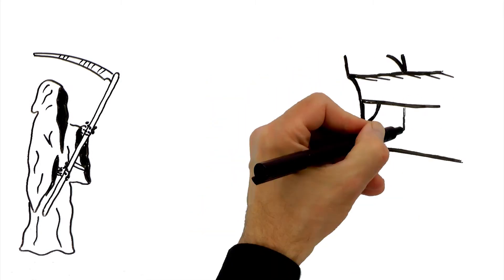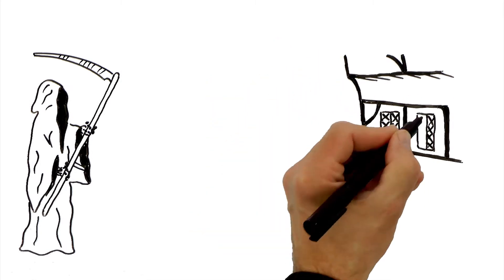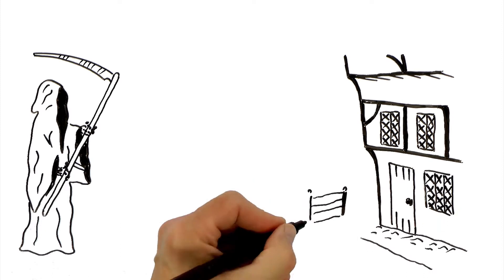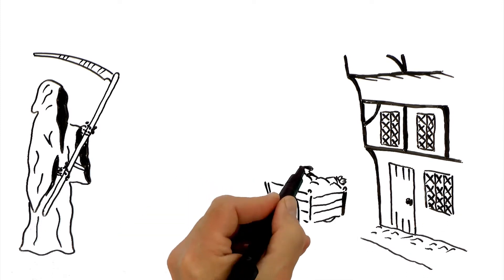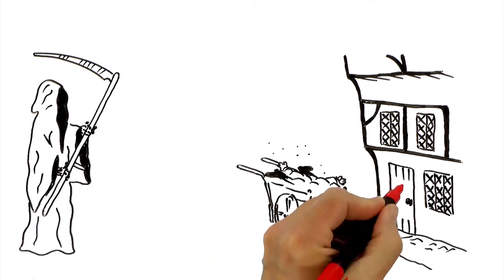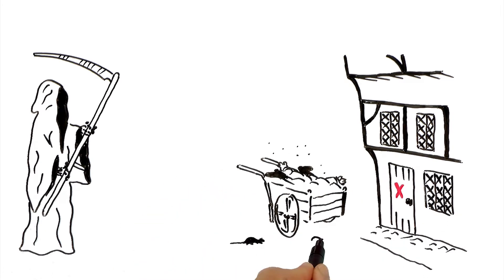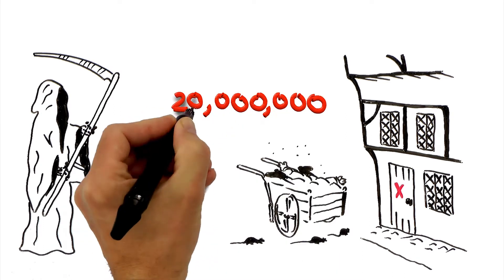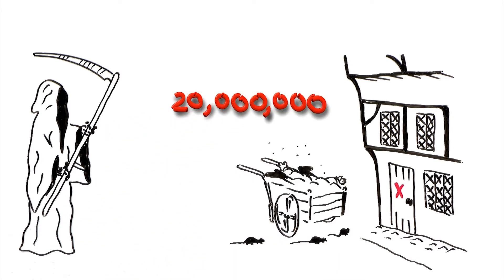In the Middle Ages, bubonic plague, also known as the Black Death, was mainly spread through fleas carried by infected rats. In five years, it's estimated to have killed over 20 million people in Europe alone.